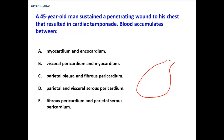The pericardium has two layers to start with: a fibrous pericardium and a serous pericardium. The serous pericardium, like any other serous membrane in the body, has a parietal layer and a visceral layer. The visceral layer is directly related to the heart, and the pericardium also covers the origin of the great vessels, where the visceral pericardium is then reflected as the parietal layer of the serous pericardium.